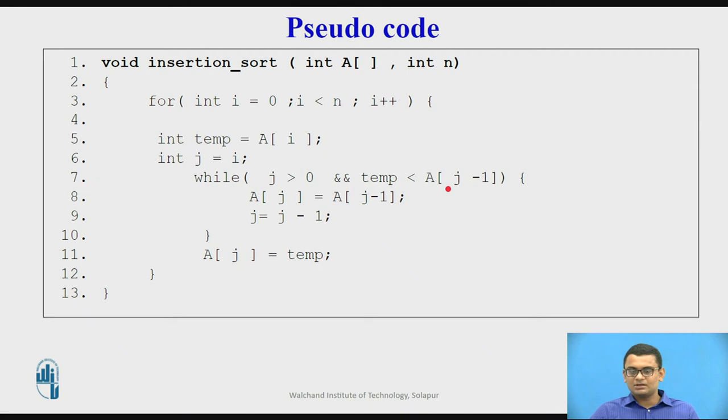If this value becomes small, the value at j-1 index becomes small, then all the elements will be shifted to make place for the value stored in the temp variable. Once they are shifted, at the jth location the value stored in temp will be inserted.